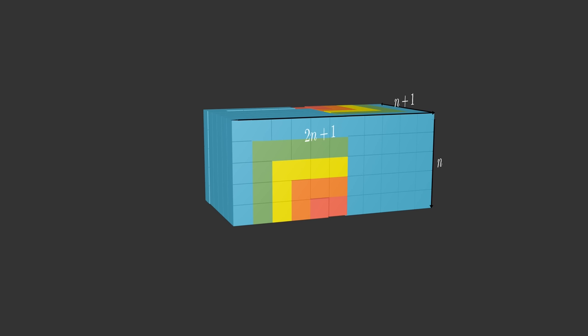Finally, if we observe the face of the cuboid that is facing us, we notice the n by n blue square, one red cube, and then all the sequence of colors, which gives another n, which means that the length of the side is 2n plus 1.